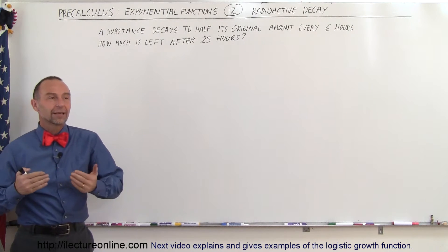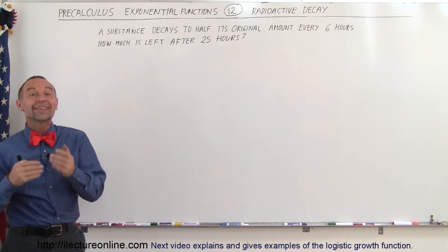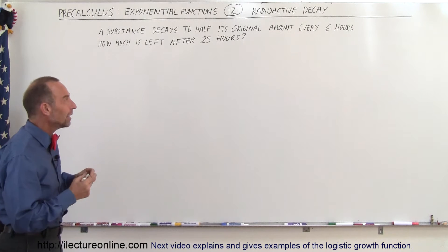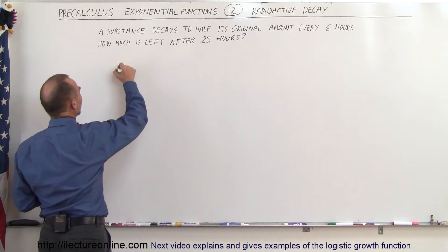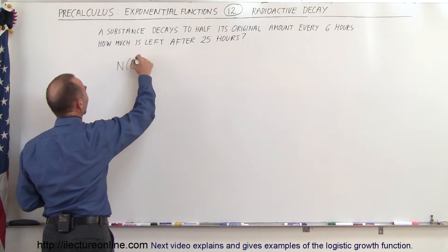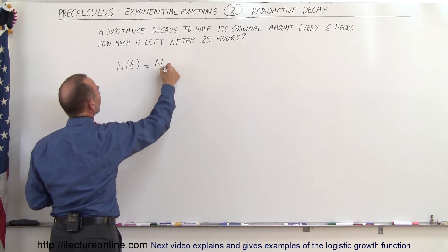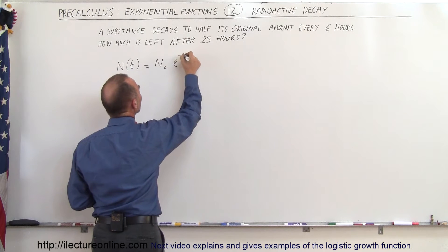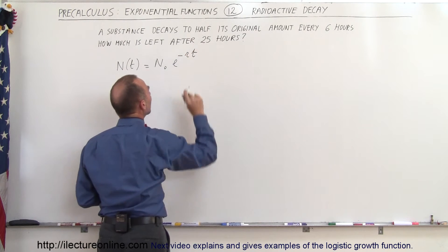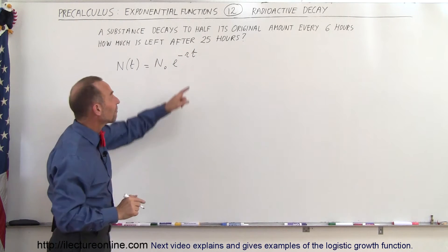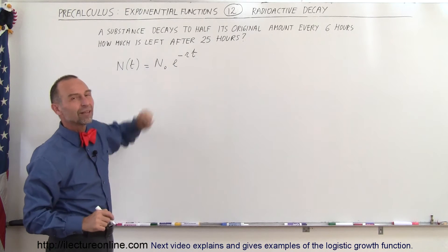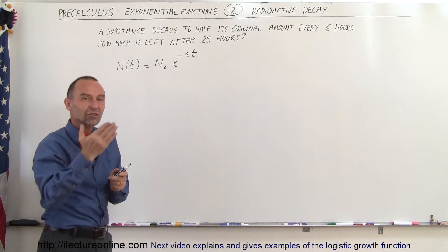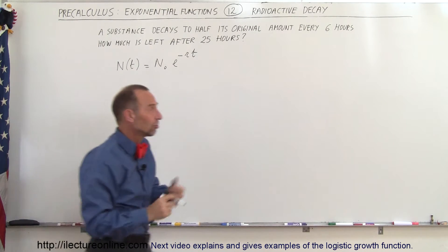For example, things that radioactively decay can be written such that the number remaining N as a function of t is equal to the initial amount times e to the minus r times t. The only difference is the minus in the exponent instead of a plus, so the amount actually declines exponentially instead of grows exponentially.